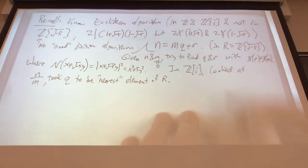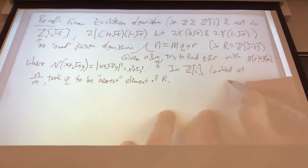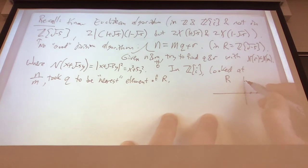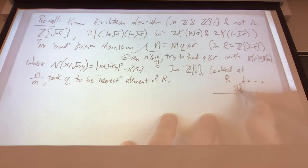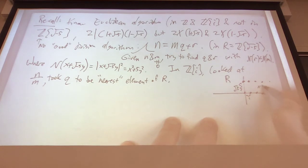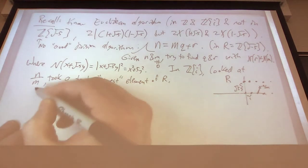Here's our lattice R, this Z[√-5]. In the X direction we can shift by 1, and in the Y direction we can shift by √5. So this is √5 and this is 1. We get some point N over M. What's the farthest it could be? The distance from N/M to Q could be as large as...